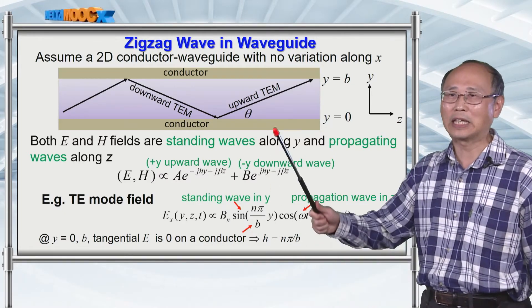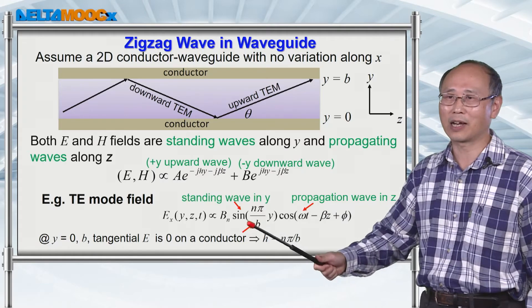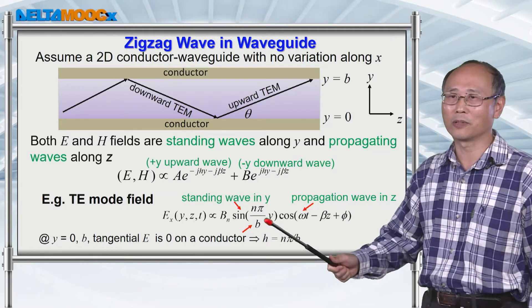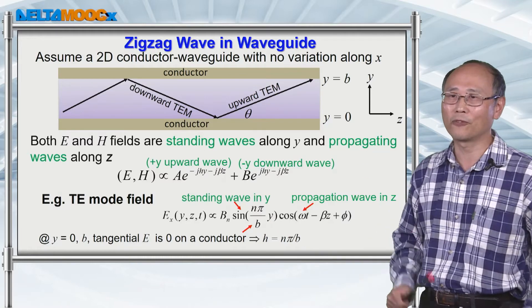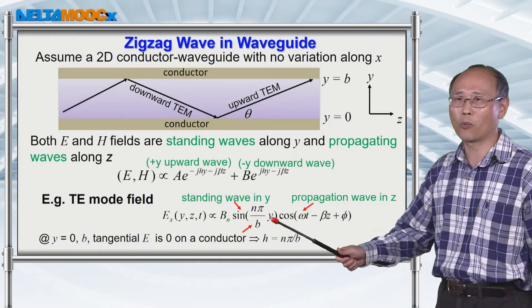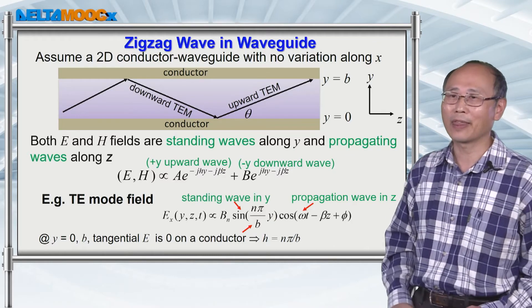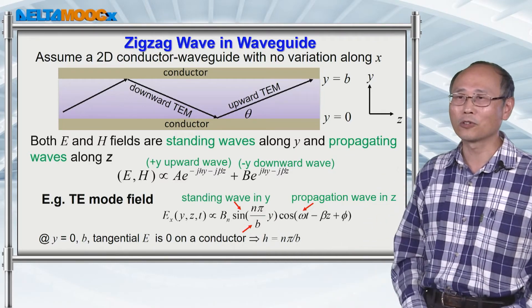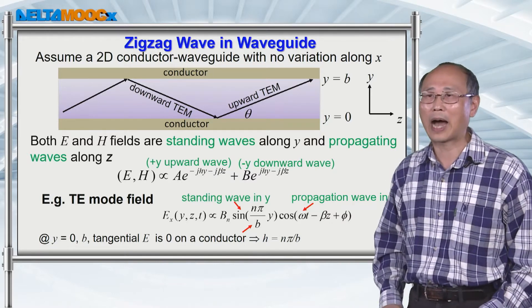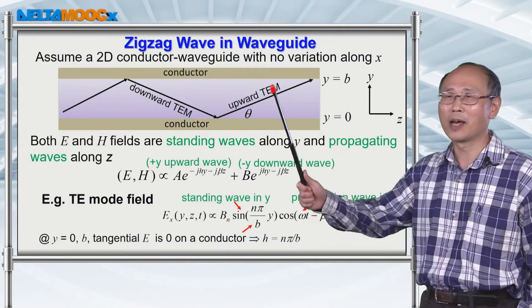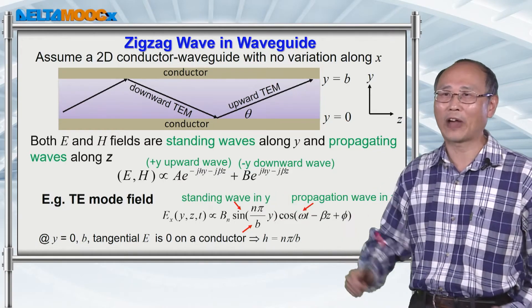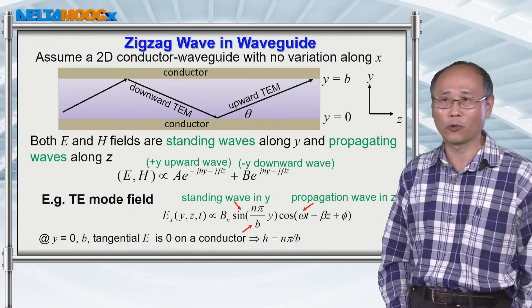You can easily verify the sine term: when you set y equal to zero, the whole field goes to zero. If you set y equal to b, then sin(nπ) also gives you zero. So now you have a good understanding about the eigenvalue and also the field synthesized from this off-axis TEM wave.